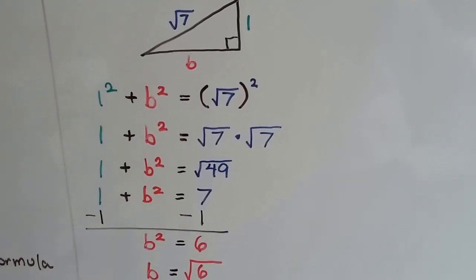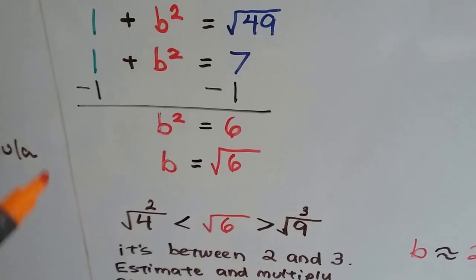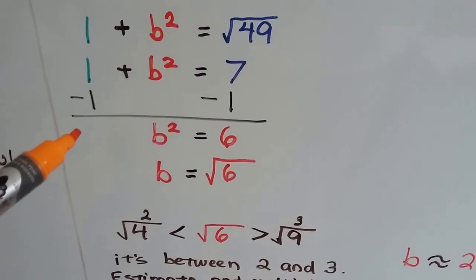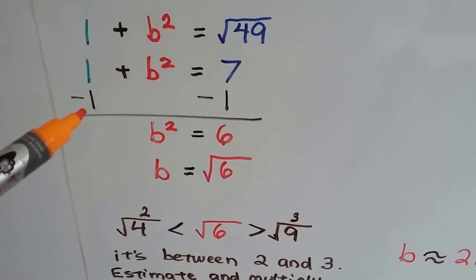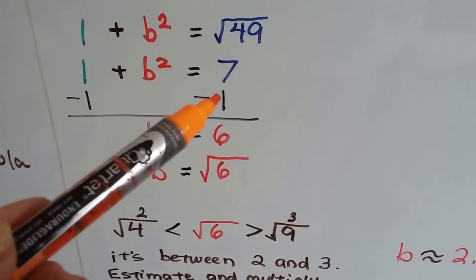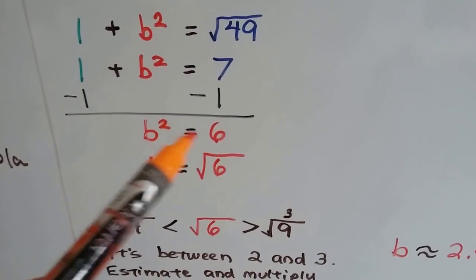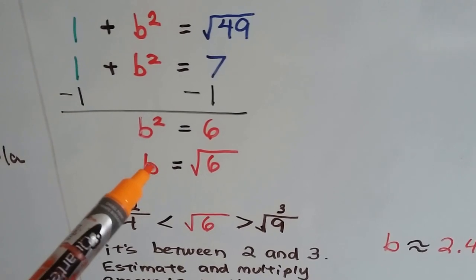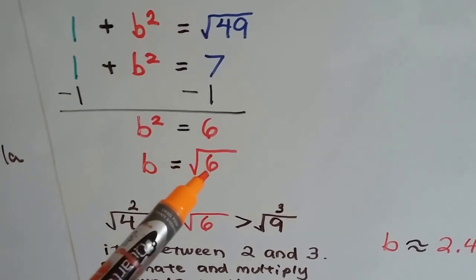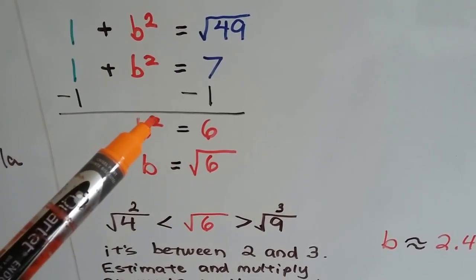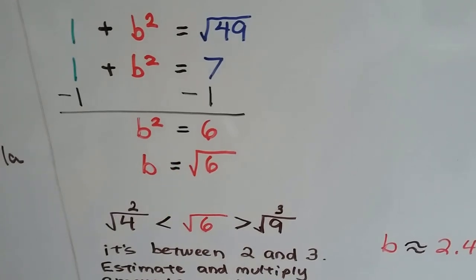So 1 times 1 is a 1. 1 plus b squared equals 7. And we can just use additive inverses, can't we? We take away the 1 from this side, we take away a 1 from that side, and we get b squared equals 6. So that means b is equal to the square root of 6. See how we took off the exponent and added the radical sign?